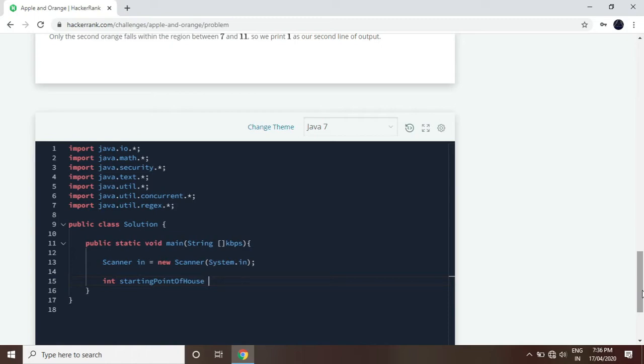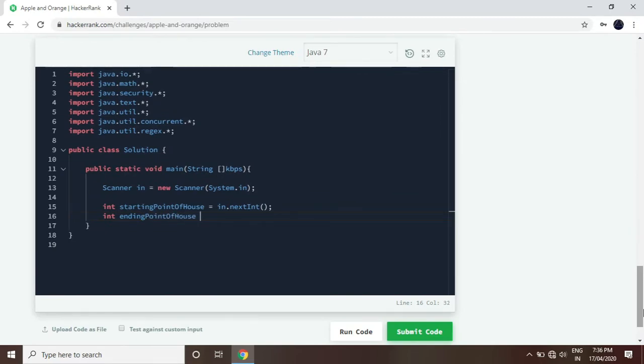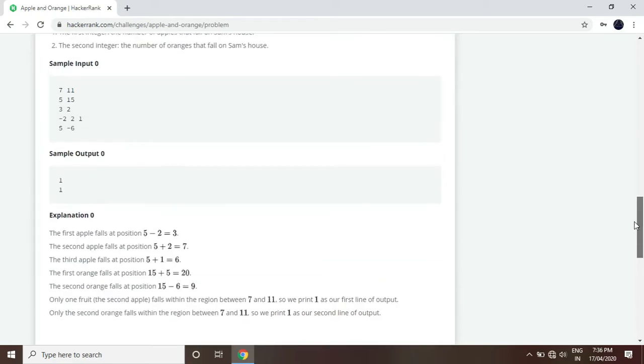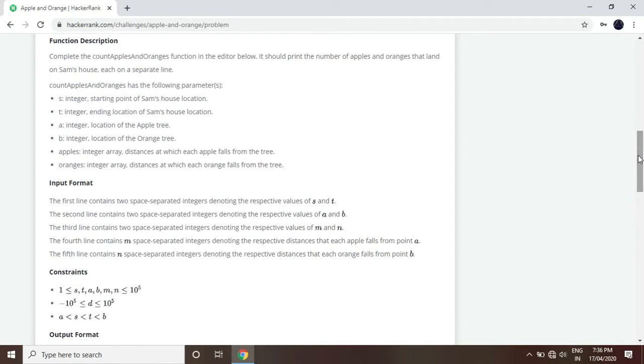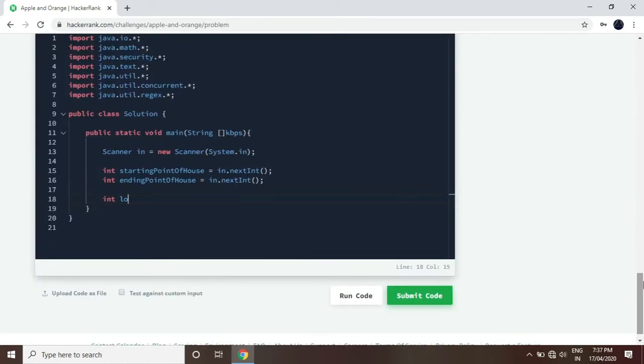We will create variables. This is going to take offense, that is a first step. Plus we will create variable options. Now we will get to it. A and B, what is the location of apple tree, location of orange tree.